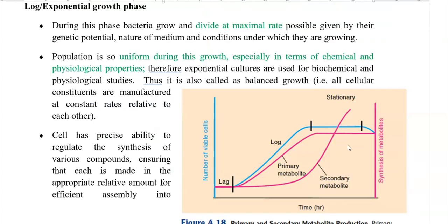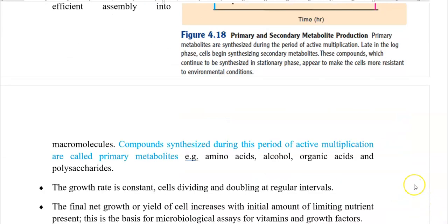The next phase is the exponential or log growth phase. During this phase, bacteria grow and divide at a maximal growth rate, as permitted by their genetic potential, the nature of the medium, and the conditions of incubation. The population is uniform in terms of chemical and physiological properties of the cells. Therefore, exponential cultures are used for biochemical and physiological studies. This phase is also referred to as the balanced growth phase — all cellular constituents are manufactured at a constant rate relative to each other. Cells have the precise ability to regulate the synthesis of various compounds, ensuring each biomolecule is made in appropriate relative amounts for efficient assembly into the final cell structure.